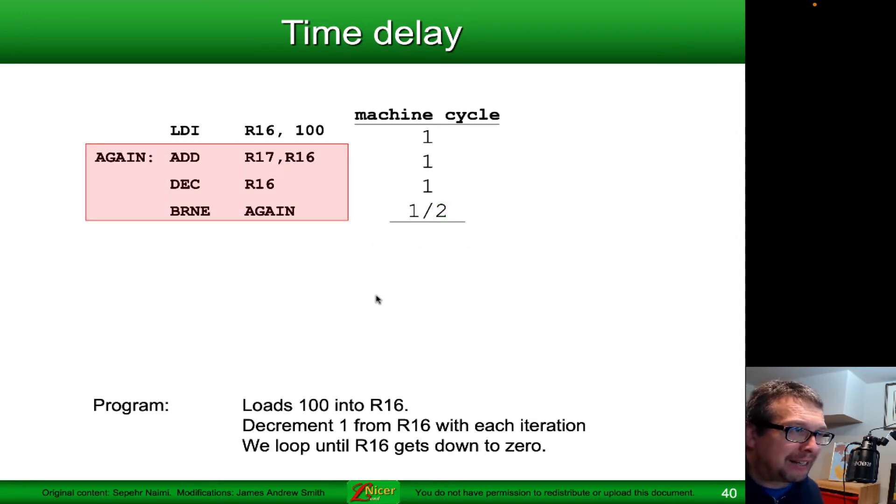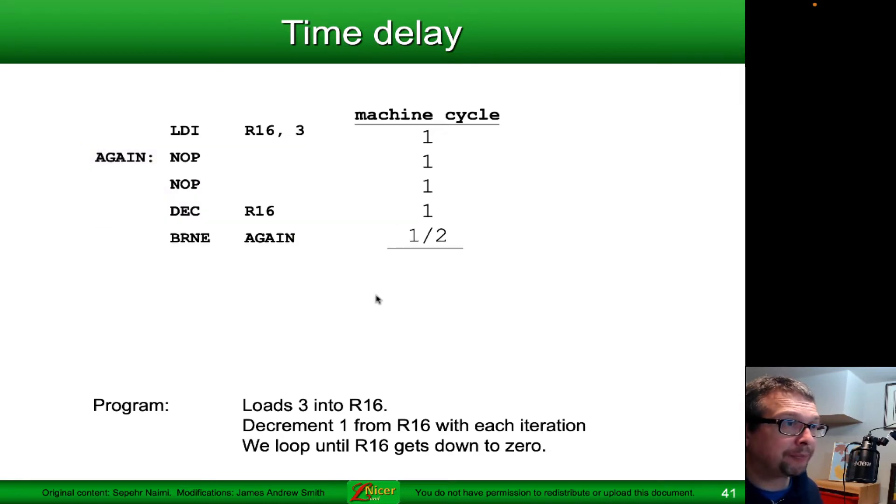Because we are looping 100 times, we do one machine cycle for the first LDI, then the add R17, R16 is done 100 times, or 100 cycles. The decrement is also done 100 times, adding 100 clock cycles. The branch, if not equal, is done 100 times. However, it's only done 99 times at two clock cycles and once at one clock cycle.